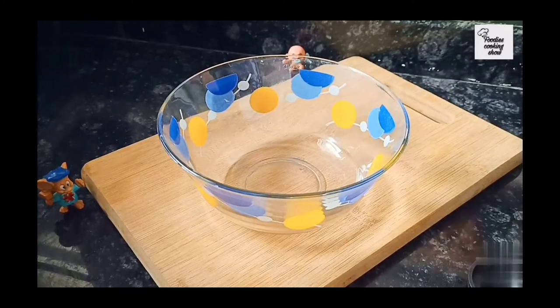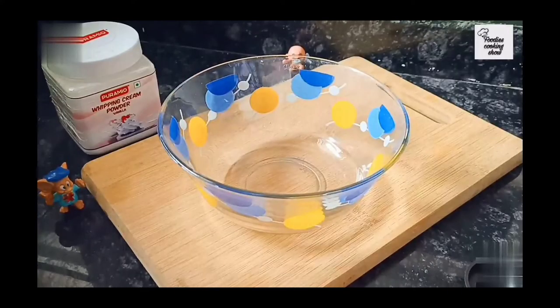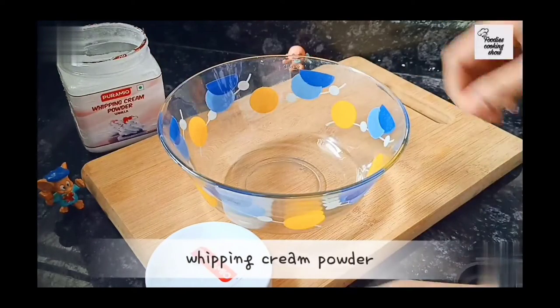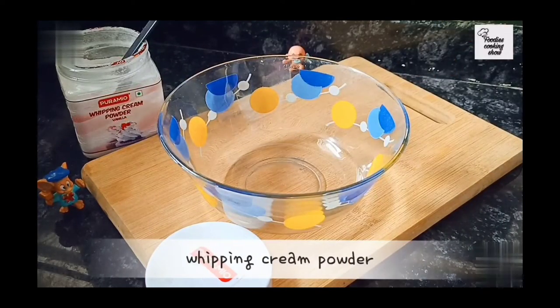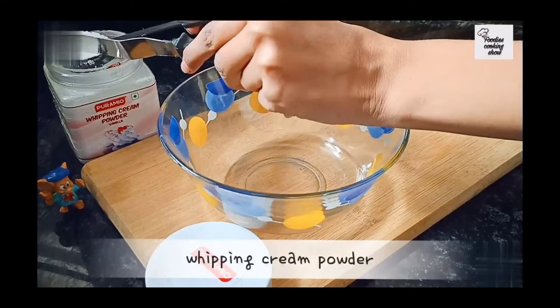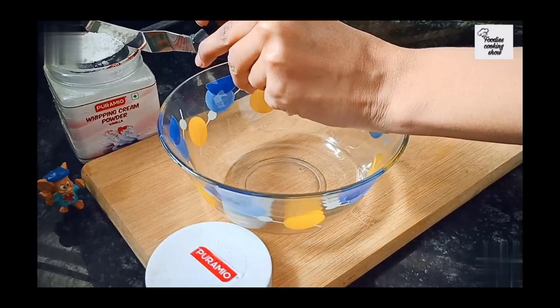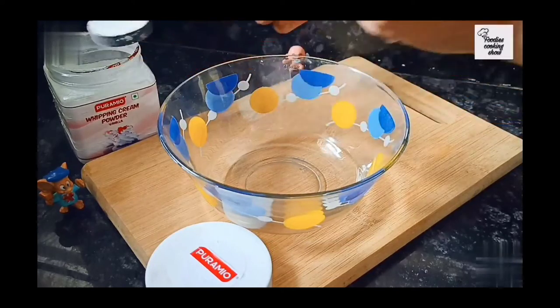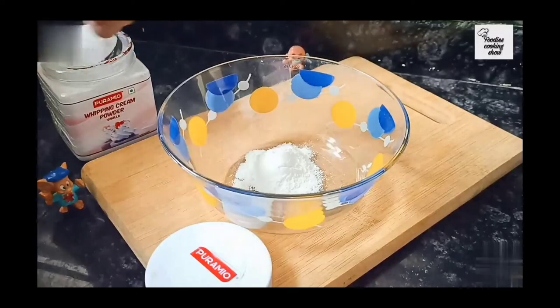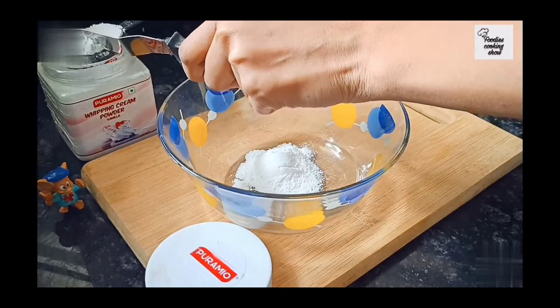So first take a bowl and put the cream powder. If you have fresh cream, whip it directly. Start whipping by adding cold water or milk. Here I am using Paramor whipping cream powder. If you want to buy this, there is a link in the description box. I already uploaded the video of its unboxing, its link is also in the description box. I have taken three spoons of cream powder, you can also take your own.